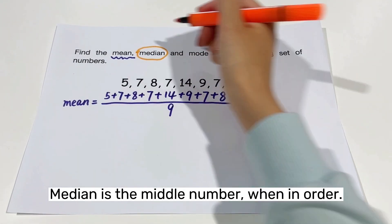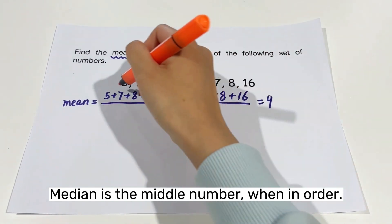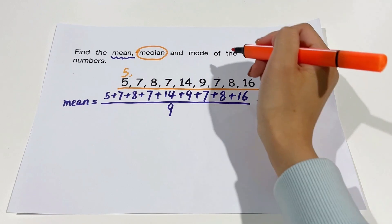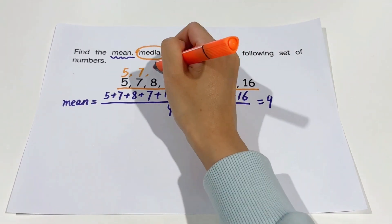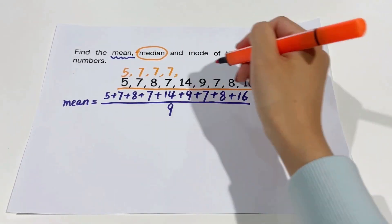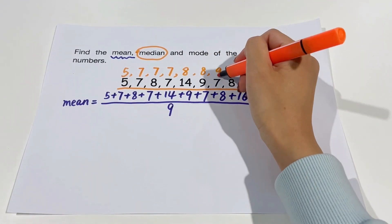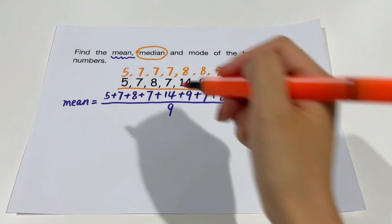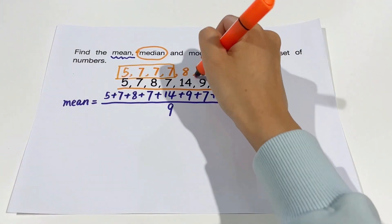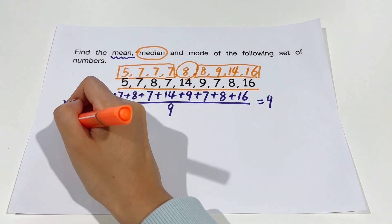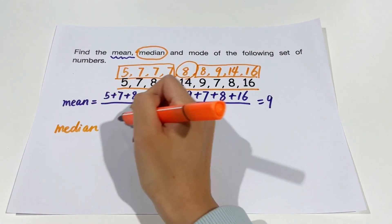Median is the middle number when in order. To find median, first organize and order the data from smallest to largest. To find the midpoint value, divide the number of observations by two. If there are an odd number of observations, round that number up and the value in that position is the median. If the number of observations is even, take the average of the values found above and below that position.